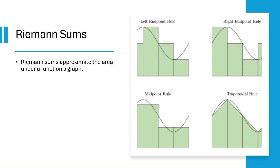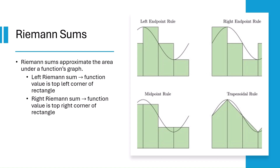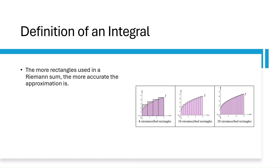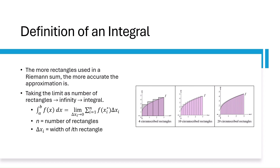Say we want to approximate the area under a function's graph. We can use a Riemann sum to find this. There are four different types of Riemann sums. Left Riemann sums use the function value as the top left corner of the rectangle. Right Riemann sums use the function value as the top right corner. The midpoint rule uses the function value as the midpoint of the top two corners, while the trapezoid rule uses trapezoids with the top left and top right corner each being unique points on the graph. The more rectangles you use in a Riemann sum, the more accurate the approximation is. Taking the limit as the number of rectangles approaches infinity gives us an integral — the limit as the width of the rectangles approaches zero of the sum of all the heights times the widths.